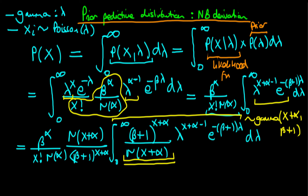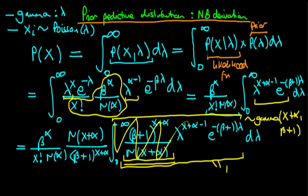Now we can see the point of our trick: we're just integrating over a gamma density over all potential values of lambda, and because of that this whole second term just has to equal 1. Hence, we can get rid of this whole second term in its entirety.